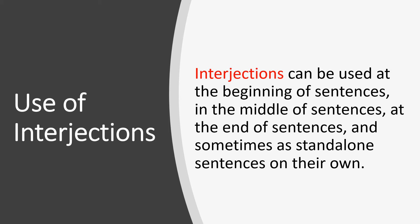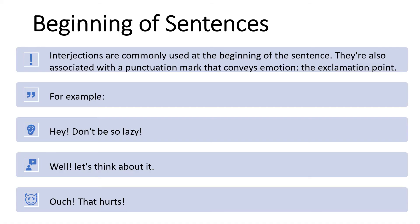Interjections can be used at the beginning of sentences, in the middle of sentences, at the end of sentences, and sometimes as stand-alone sentences on their own. Interjections are commonly used at the beginning of sentences and are associated with a punctuation mark that conveys emotion — the exclamation point.